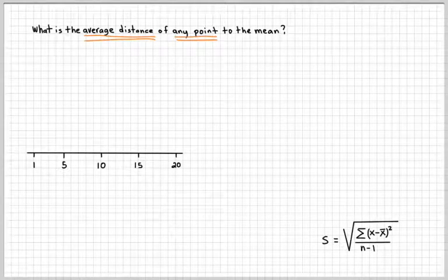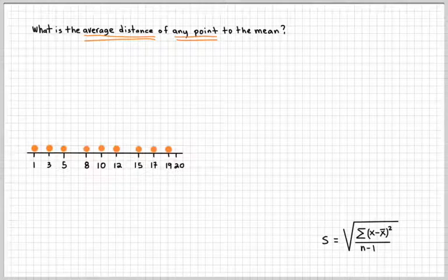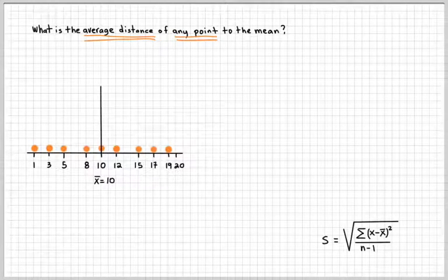Another way also is what is the average distance of any point to the mean? Let's say I have a whole bunch of data points. I have nine of them here, and the average is 10.